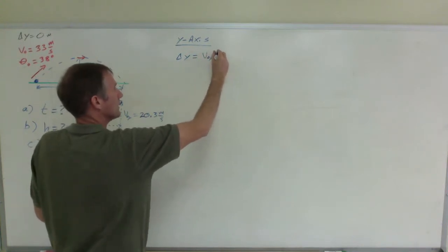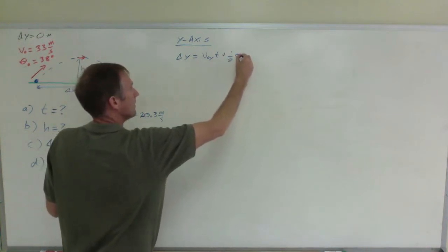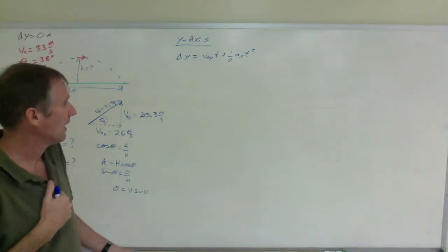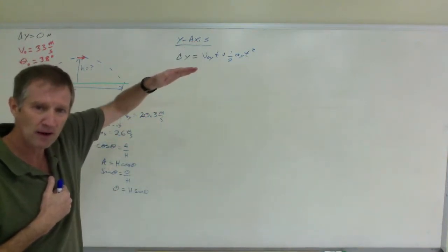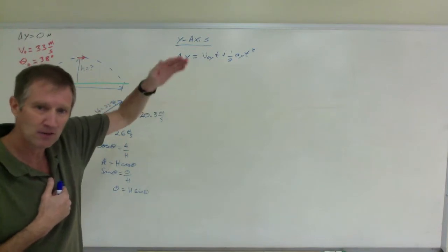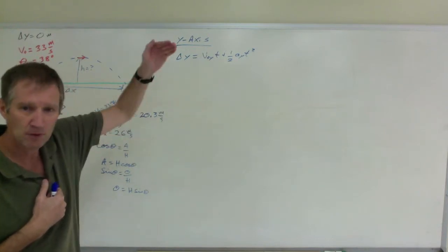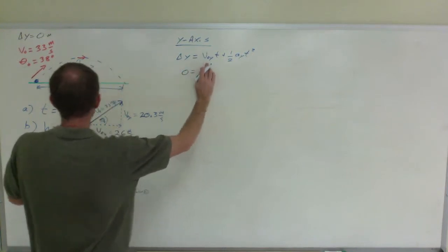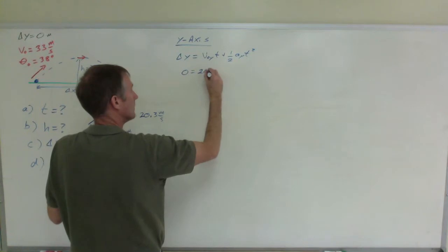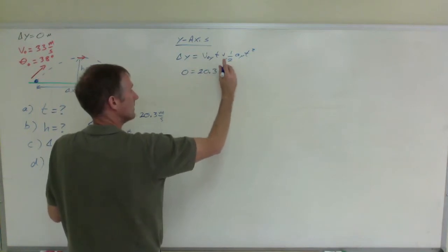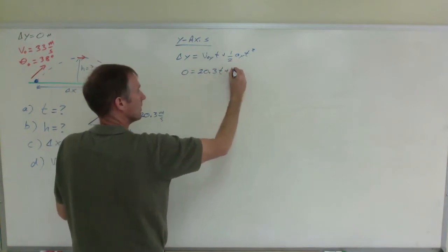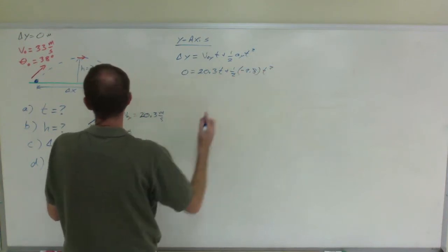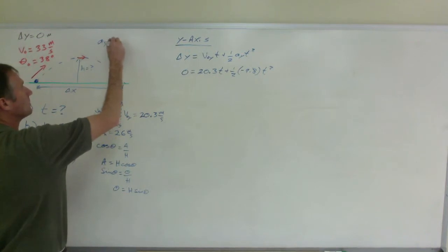I am going to use this one. So v sub zero y times t plus one half a y t squared. You could also solve for the velocity going up at the time it takes to go up, halfway, and then double that time to get the time it goes up and down, because it takes half the time to go up, half the time to come down. Well, I am going to do it this way. So that is zero. This is 20.3 t. That is plus a half negative 9.8 t squared. Remember that the acceleration in the y-axis is always negative g.